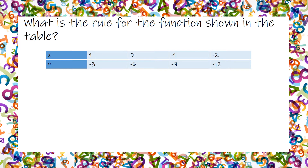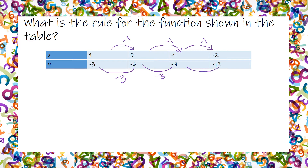What is the rule for the function shown in the table? I'm going to look and say the x-values go down 1, down 1, down 1. And my y-values go down 3, down 3, down 3.